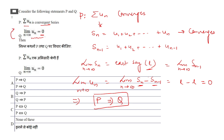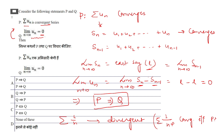However, the converse is not true. For example, Σ1/n is a divergent series (harmonic series), yet its terms 1/n → 0. The p-series 1/n^p converges if and only if p > 1, and diverges for p ≤ 1. So Q does not imply P.